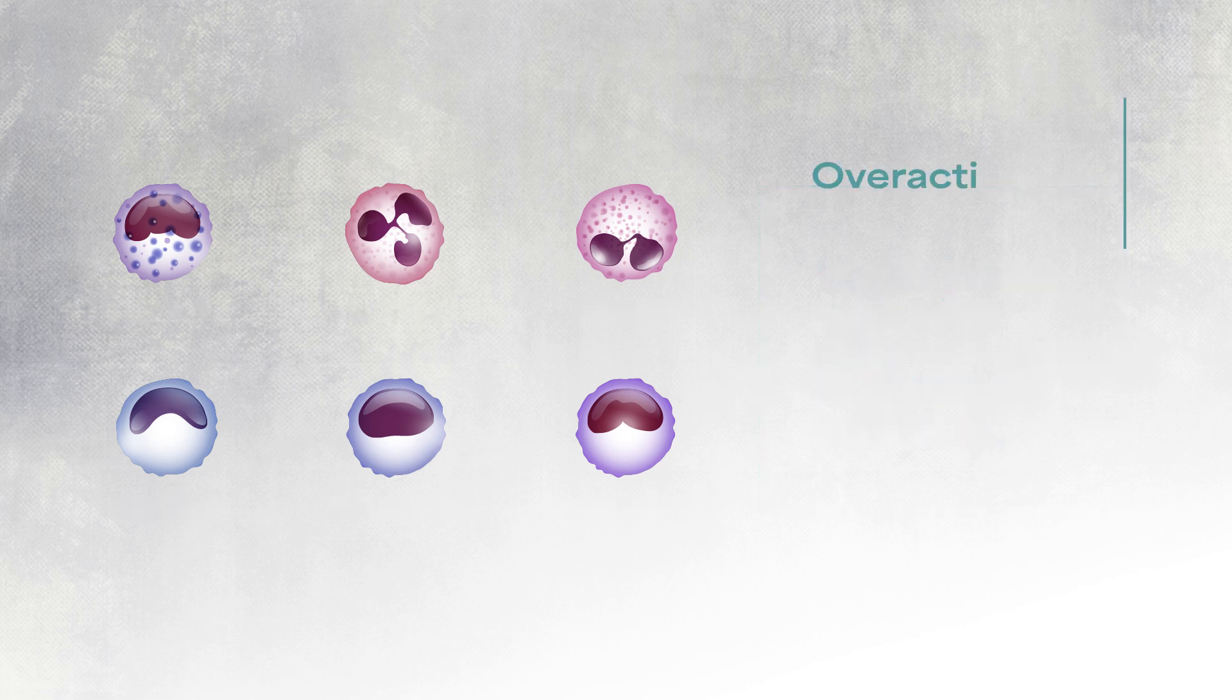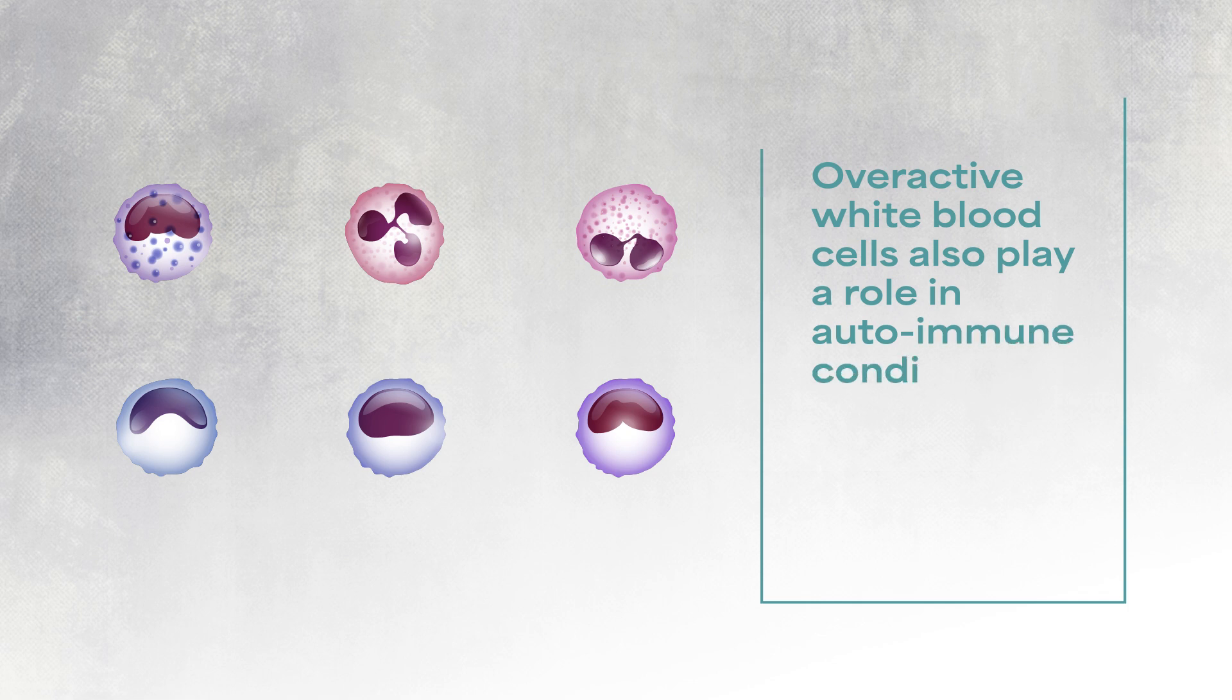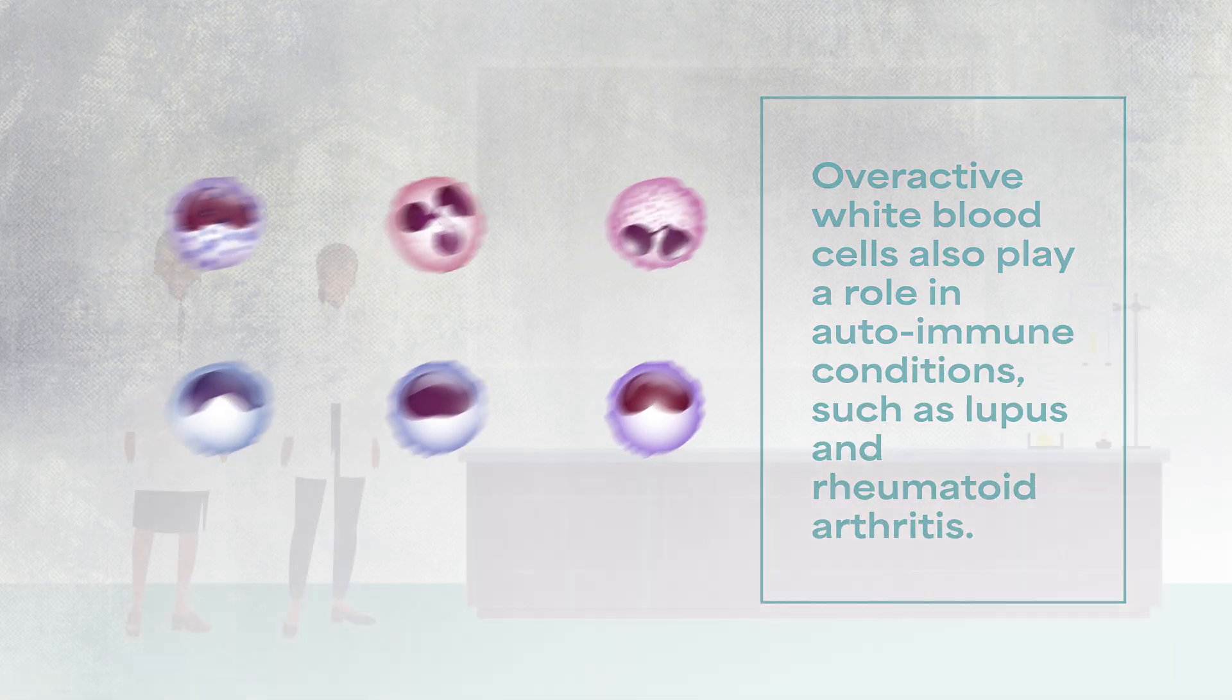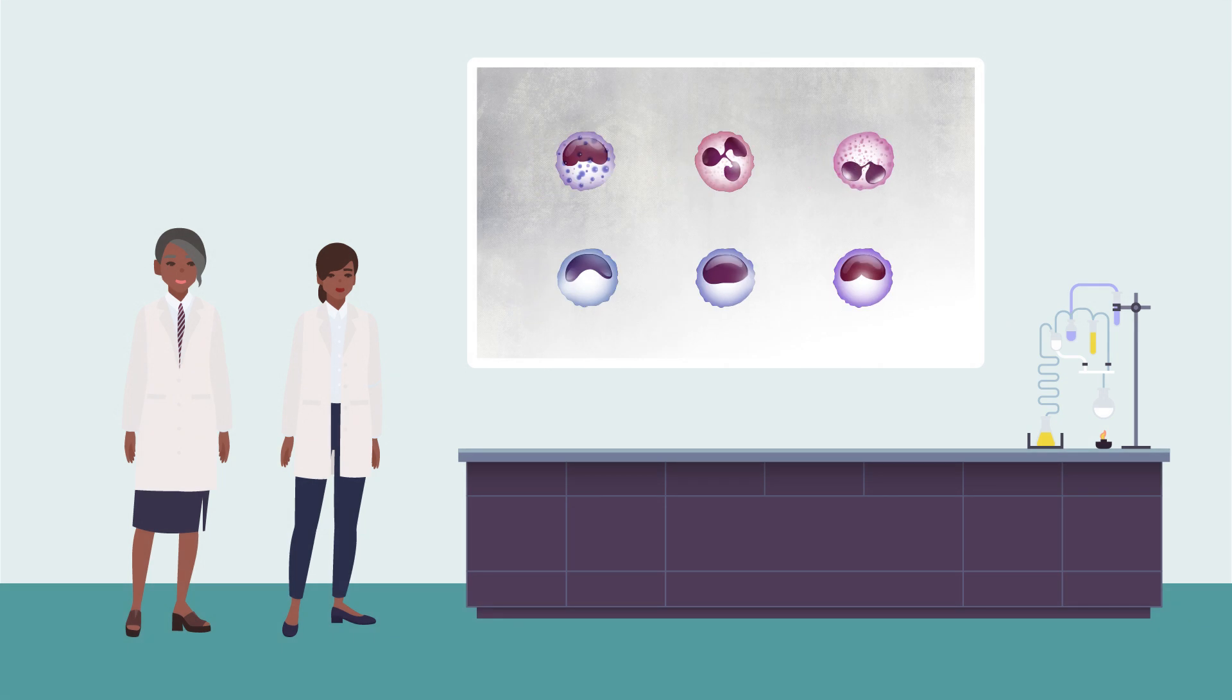However, overactive white blood cells also play a role in autoimmune conditions, such as lupus and rheumatoid arthritis. As such, scientists are trying to better understand how blood cells develop to find new ways of treating these conditions.